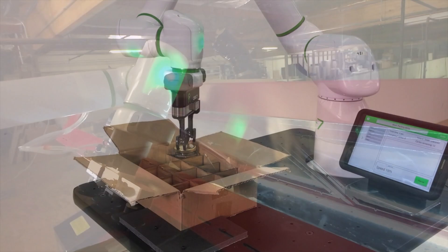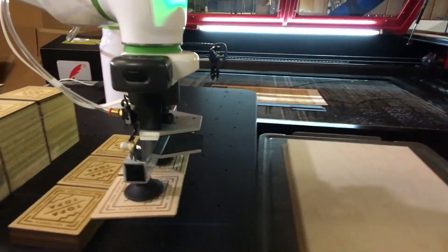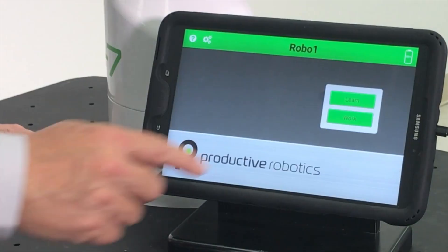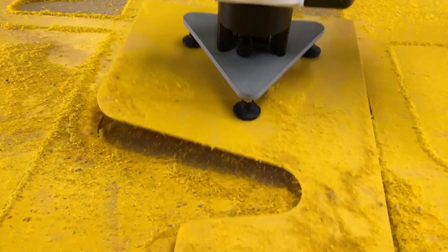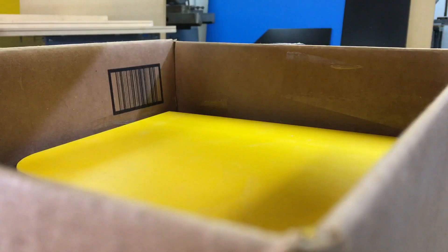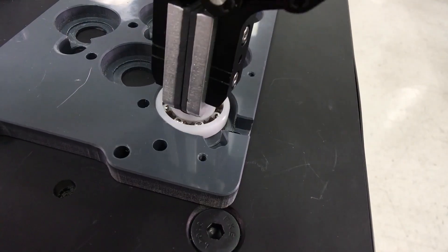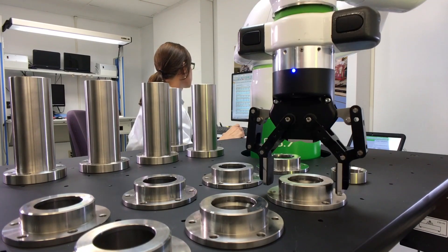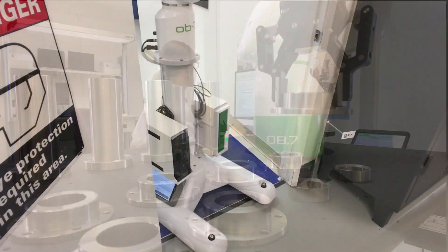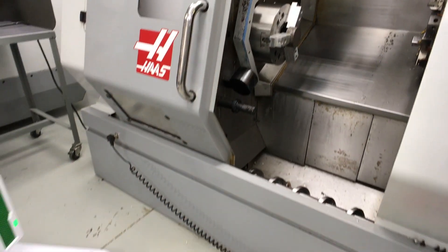But most jobs are more complex. But teaching OB7 even the most complex jobs is still simple. You can teach OB7 to tend to machine, assemble a product, or precisely measure a machined part. With OB7 you can automate just about anything.